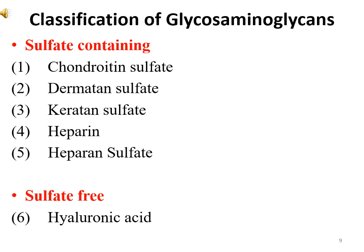The classification of glycosaminoglycans includes two types: sulfate-containing and sulfate-free. Sulfate-containing glycosaminoglycans consist of chondroitin sulfate, dermatan sulfate, keratan sulfate, heparin, and heparin sulfate. The sulfate-free type is hyaluronic acid.